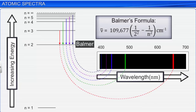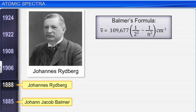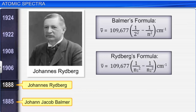The Balmer series lines are observed when electrons jump from n ≥ 3 to n = 2 principal energy level. Balmer showed that if spectral lines are expressed in terms of wave number, the visible lines of the hydrogen spectrum obey the formula: nu bar = 109677 × (1/2² − 1/n²) per centimeter, where n is an integer equal to 3, 4, 5, etc. Balmer's formula inspired the Swedish spectroscopist Johansel Rydberg to come up with a modified formula to describe all series of lines in the hydrogen spectrum.